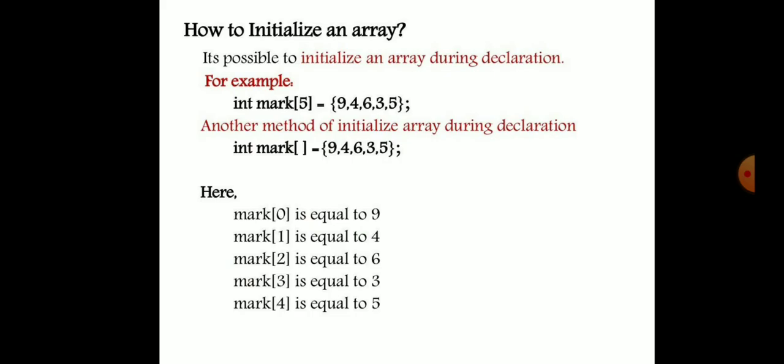It is possible to initialize an array during declaration. For example: int marks[5] = {9, 4, 6, 3, 5} — these are the 5 subjects' marks. Another method for initializing arrays is by assigning values individually during declaration: mark[0] to mark[4] are assigned 9, 4, 6, 3, and 5 respectively.